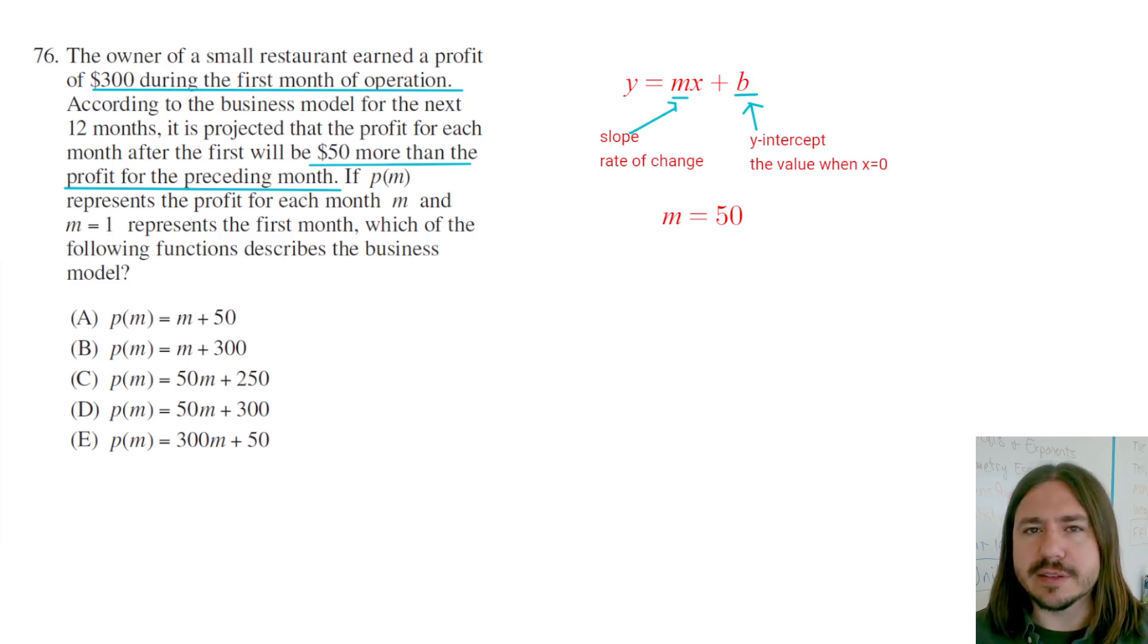I know it doesn't really make sense in context to have profit before you start operating the business in the zeroth month. But in terms of trying to create this function, the y-intercept is not going to be $300. It's actually going to be $50 less than $300.